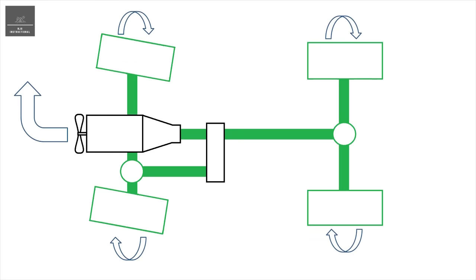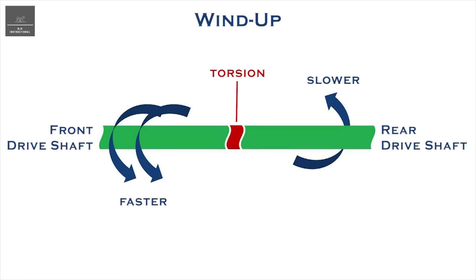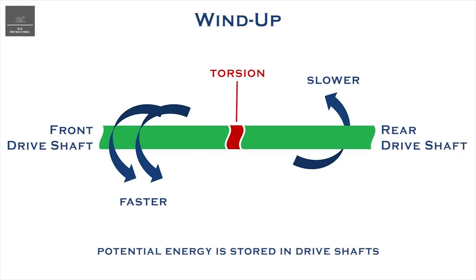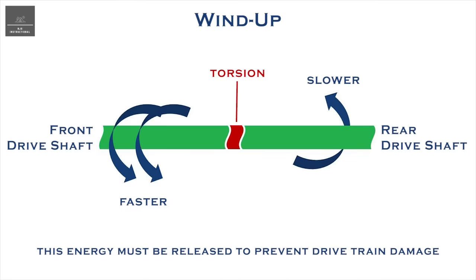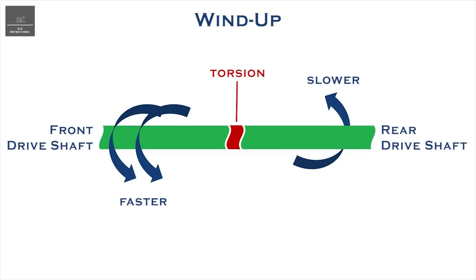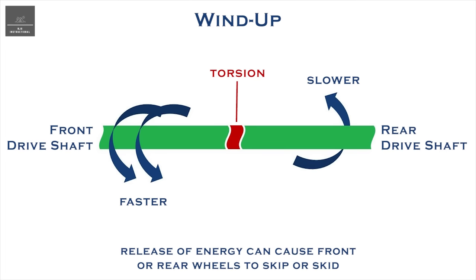If they are driven in 4H or 4L, the front driveshaft will want to rotate at a different speed to the rear driveshaft, but it can't because they are locked together. This phenomenon is called windup — essentially a twisting force known as torsion, which stores potential energy in the driveshafts. This energy has to be released, otherwise it will eventually damage the drivetrain. In low traction surfaces like gravel, this release of energy can cause the front or rear wheels to skip or skid, and this is perfectly okay and desirable.